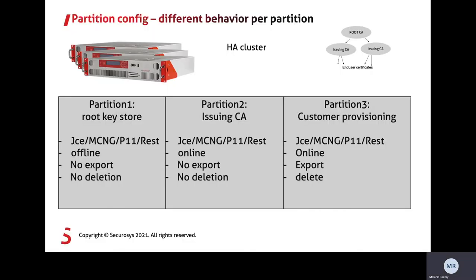Each partition can have a different behavior, which you configure in the partition configuration. For example, you can take a partition offline while the other partitions stay online. You can allow or disallow key export, and you can enable different APIs on each partition — giving you full flexibility to configure each use case exactly as you want.